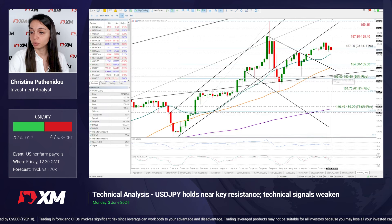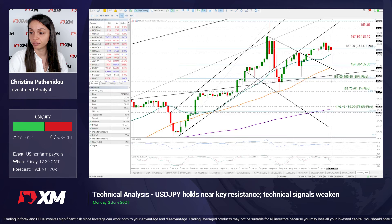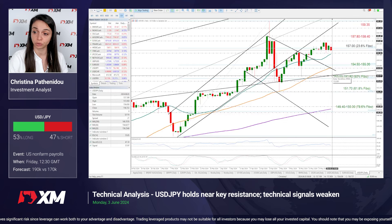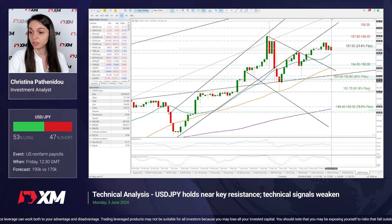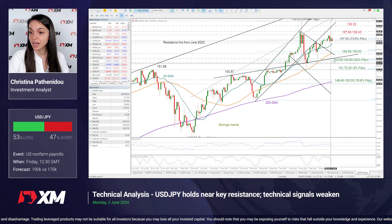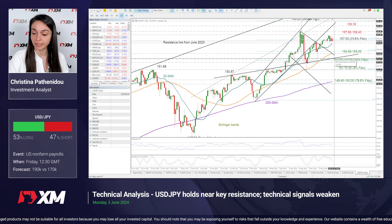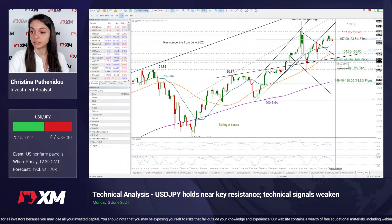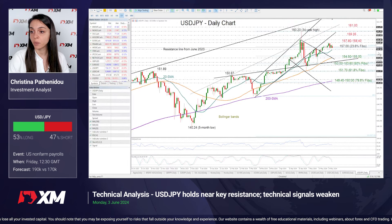Below that, I would pay attention to the 153.60 territory and the 153 level. This is where the 50% Fibonacci retracements of this up-leg, as well as this key constraining line, are located. A break below that territory would worsen the short-term outlook.